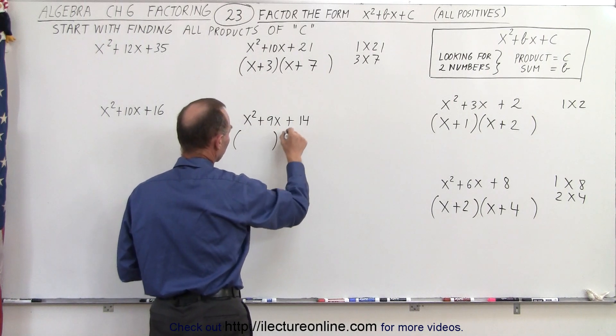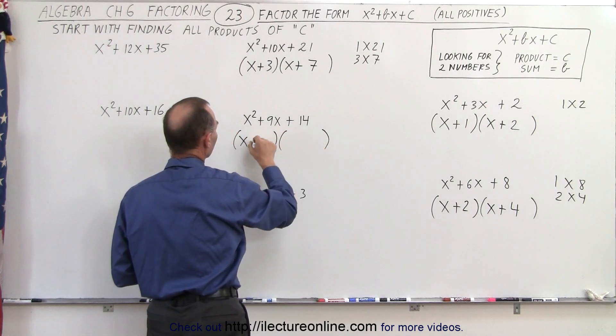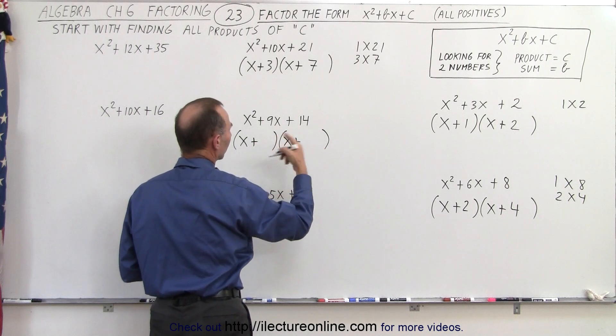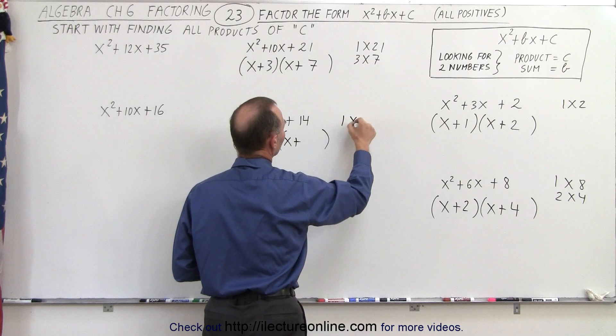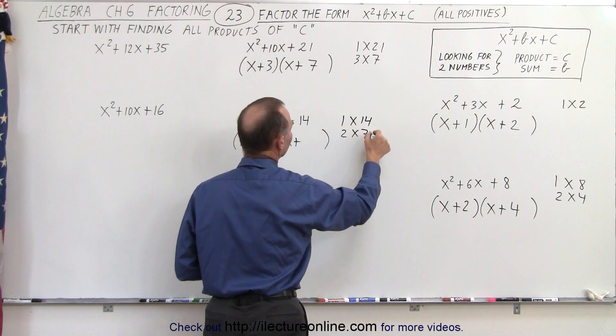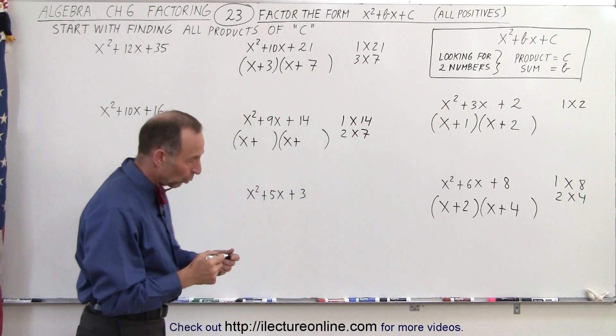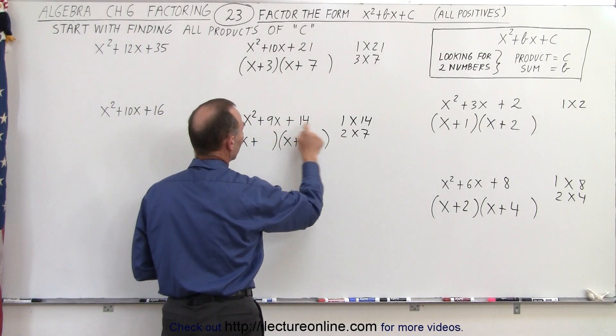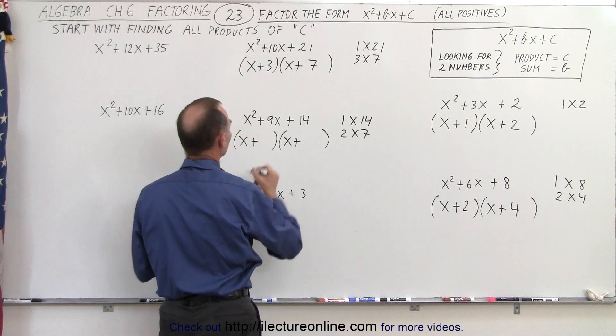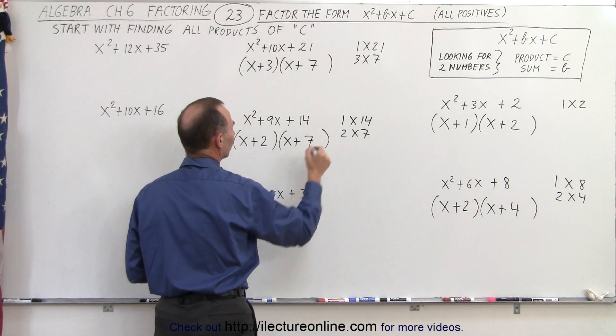Let's go for the next one. We have x plus, x plus. We're looking for two numbers. When you multiply, you get 14. That would be 1 times 14 and 2 times 7. Again, those are the only possibilities. Which combination adds up to 9? Well, 2 plus 7 adds up to 9. 1 plus 14 does not. So the only possibility is 2 and 7.